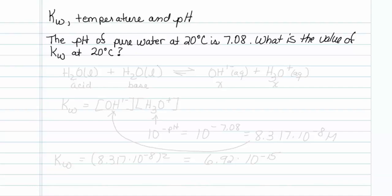This is how kW, temperature, and pH are all related. The pH of pure water at 20 degrees Celsius is 7.08. What is the value of kW at 20 degrees Celsius?